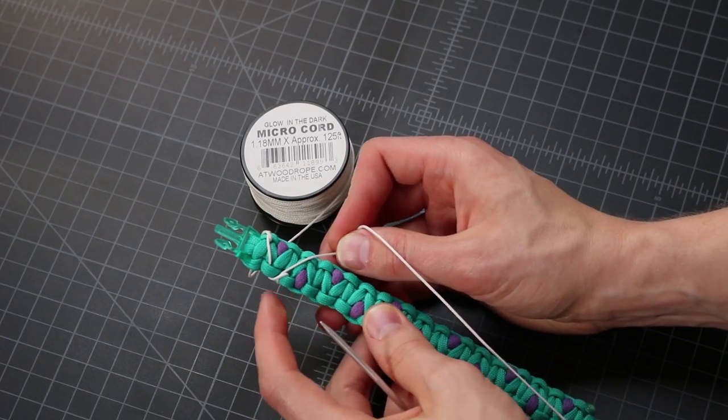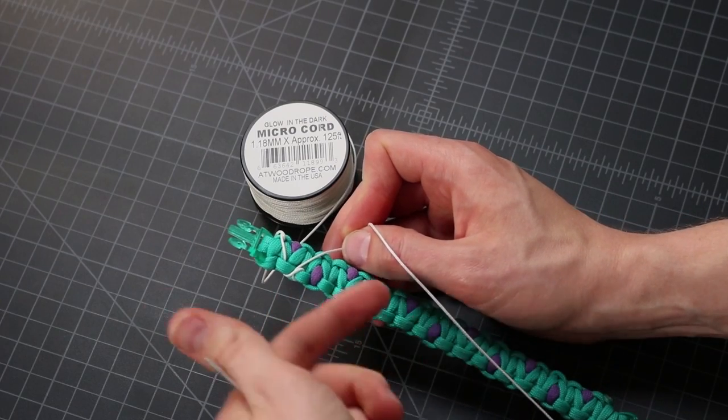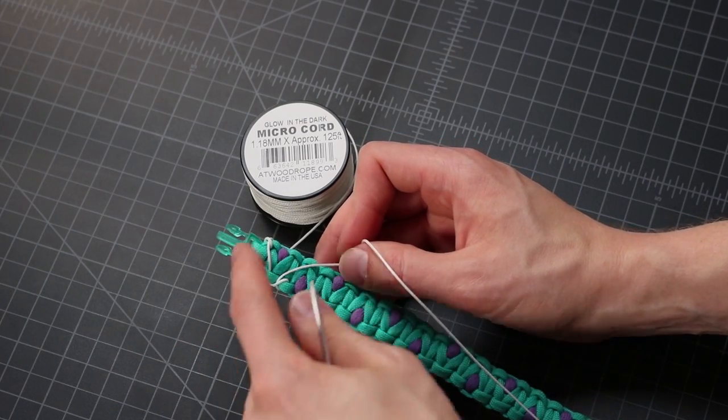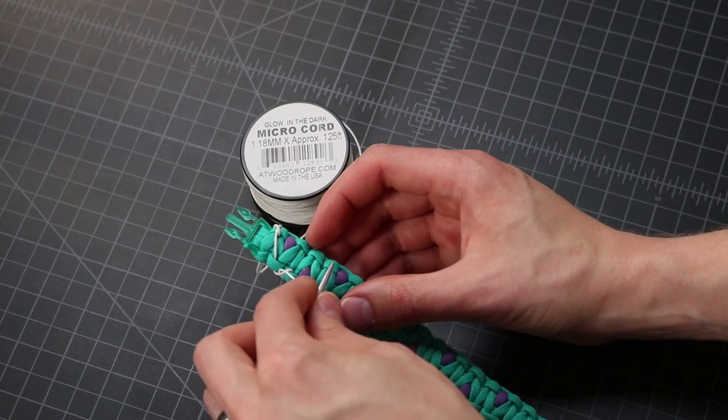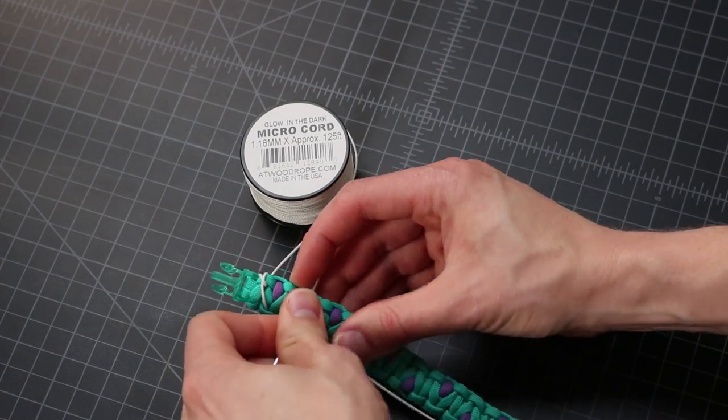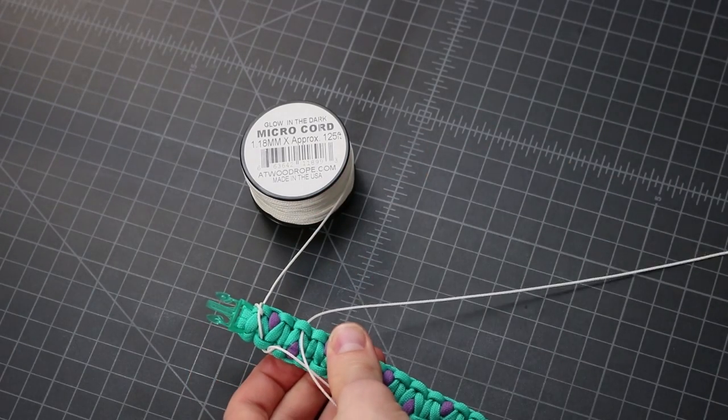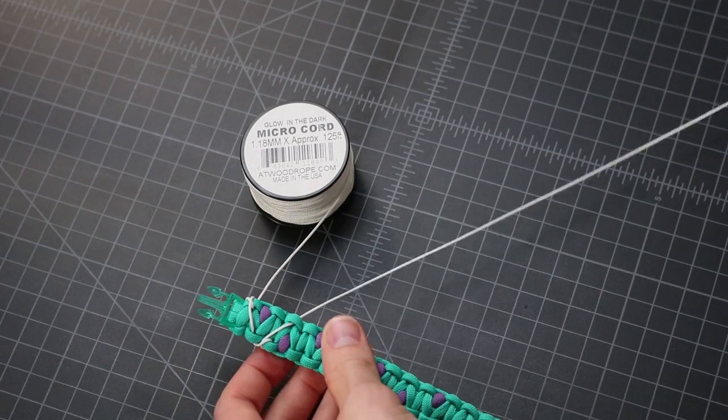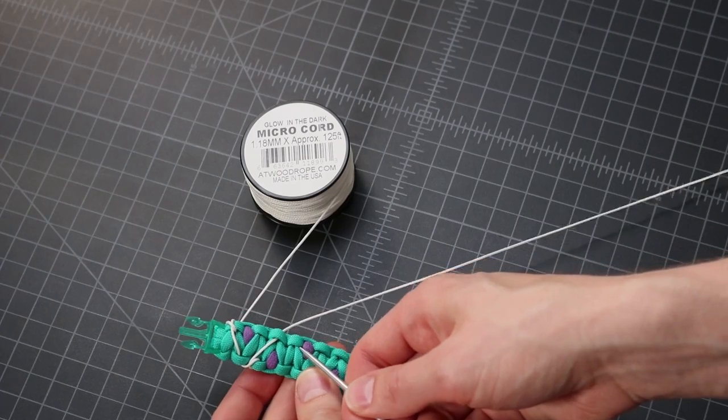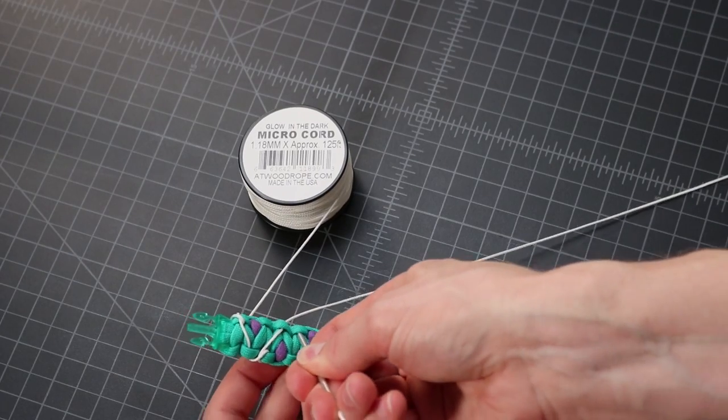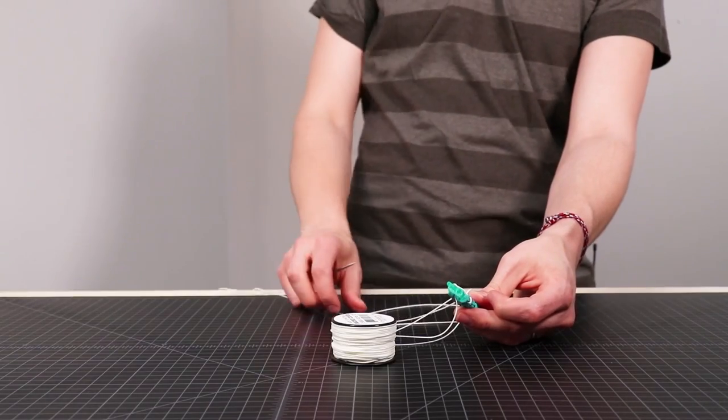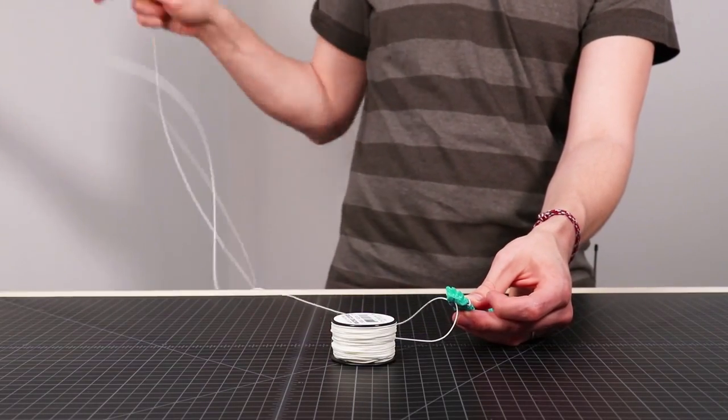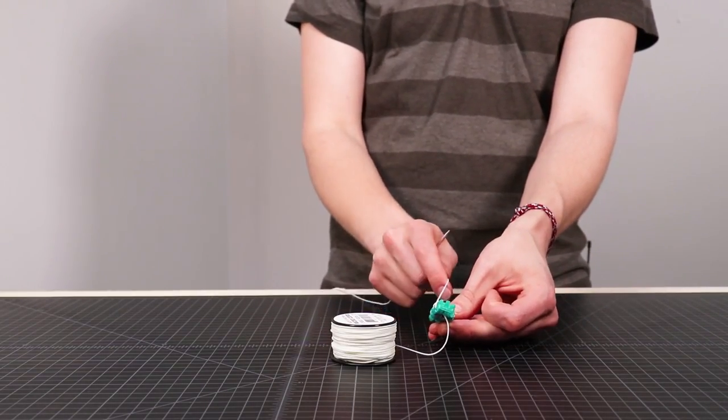We're just going to keep on zigzagging all the way down the bracelet. And then we're going to come back on the other side. So we're going to kind of have a double zigzag line the whole way. So one more time. Down through the loop opposite the eye. And then down again the one right below it. So I'll catch you when I reach the other side.